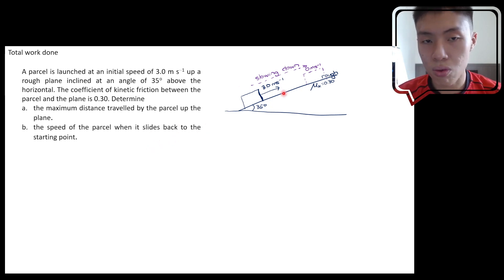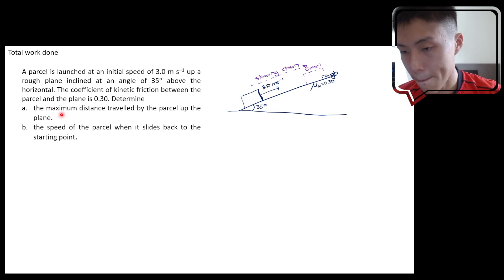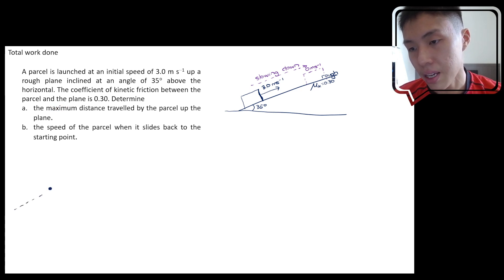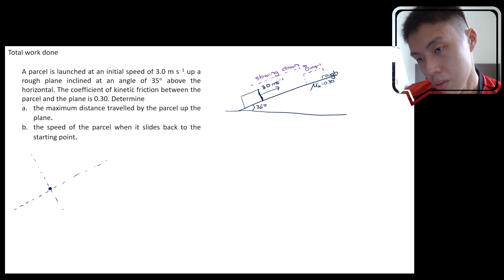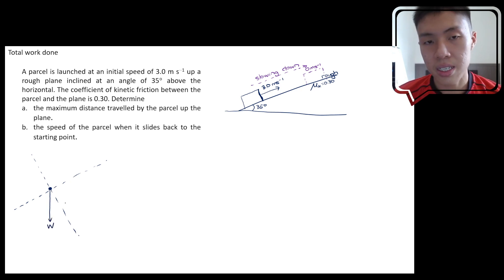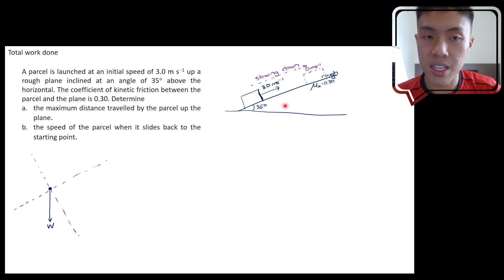Let's determine the free body diagram. We use a dot to represent the parcel on the inclined plane, then ask ourselves five questions. Does the parcel have mass? Yes, therefore it has weight. Is the parcel connected to any strings, ropes, or cables? No — so there's no tension.